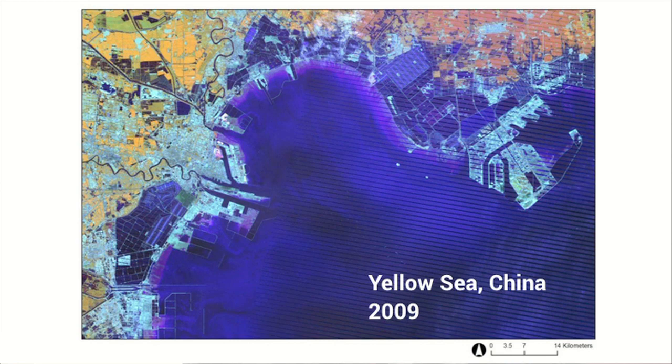The intertidal zone is under threat. This is the closest coastline to Beijing in China and over the course of the last 15 to 20 years there have been massive changes to this area, and in fact along a lot of the coastlines of the world. The intertidal zone is also threatened by sea level rise, so it's really important we develop maps of that intertidal zone and understand how they're changing across the world.